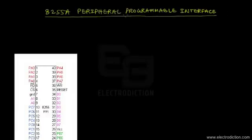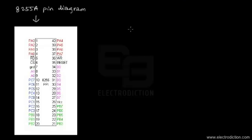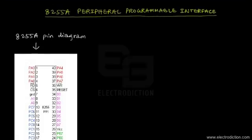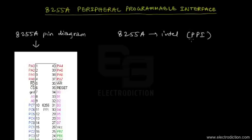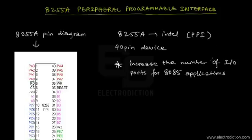Welcome to a tutorial on the 8085 microprocessor. In this tutorial we're going to discuss the 8255A Programmable Peripheral Interfacing Chip. You can see the pin diagram of the 8255 PPI chip on the left. This particular chip, the 8255A, is manufactured by Intel. It is a 40-pin device, mainly used to increase the number of input-output ports for 8085 microprocessor-related applications.